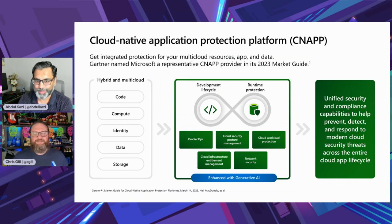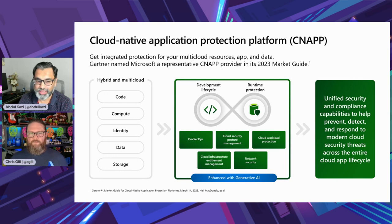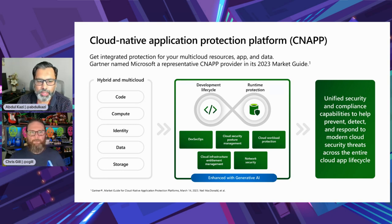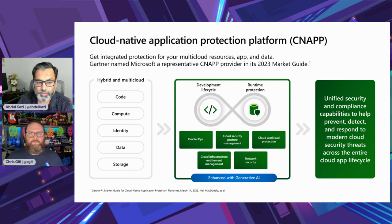CNAPP — Cloud Native Application Protection Platform — is a mouthful, but it's really a set of security measurements, policies, and practices designed to protect your cloud-based applications end-to-end. We break it down into three levels: DevSecOps, which is security management at the code level across multiple clouds and pipelines; Cloud Security Posture Management (CSPM), which provides actions to prevent breaches.